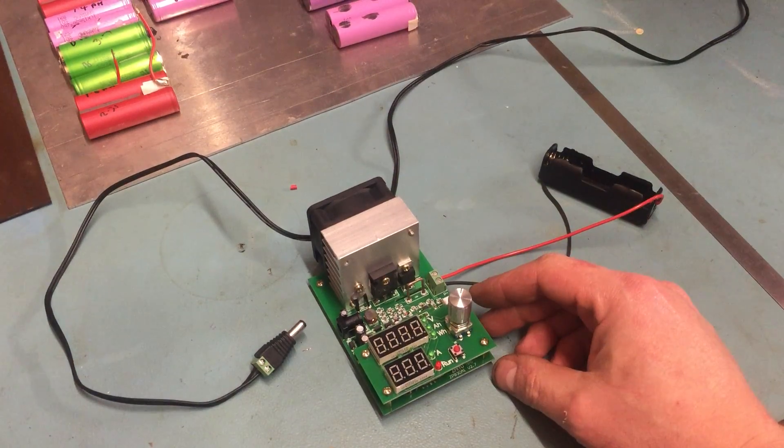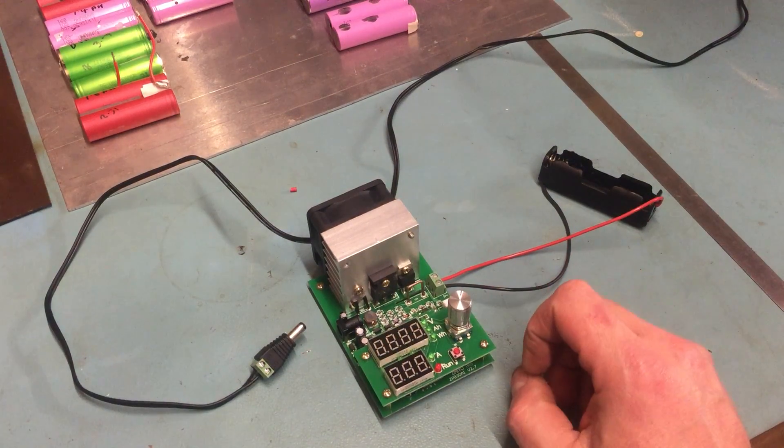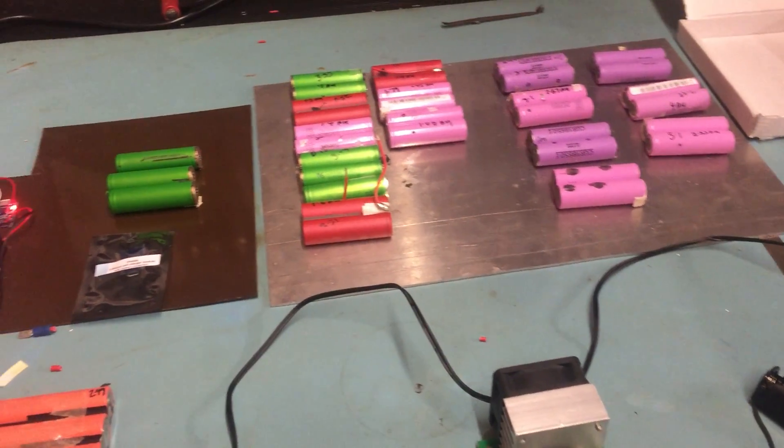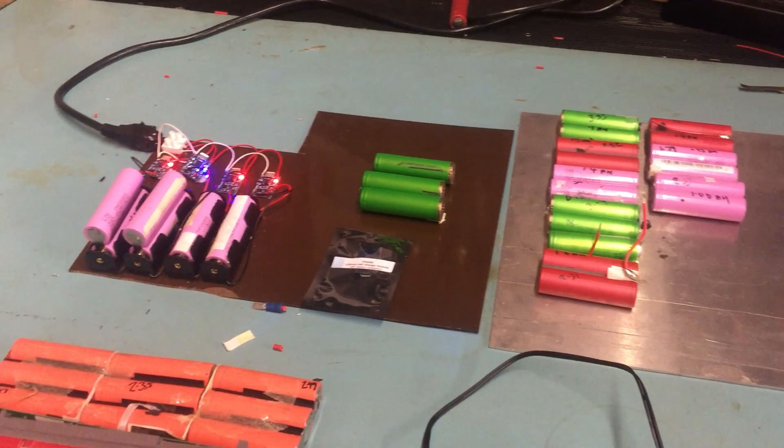This is a video on the ZPB30A constant current battery tester. I've been getting into 18650 lithium ions.